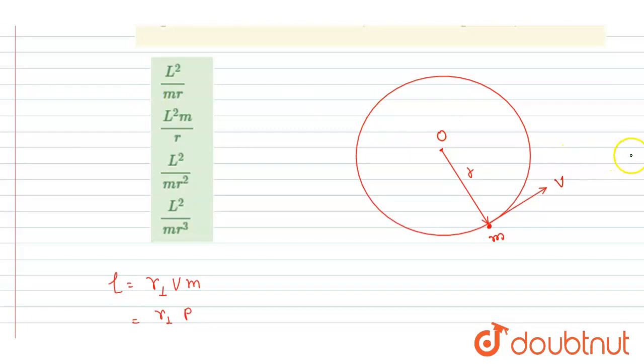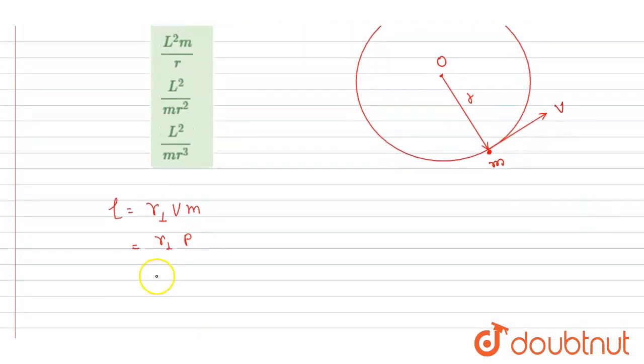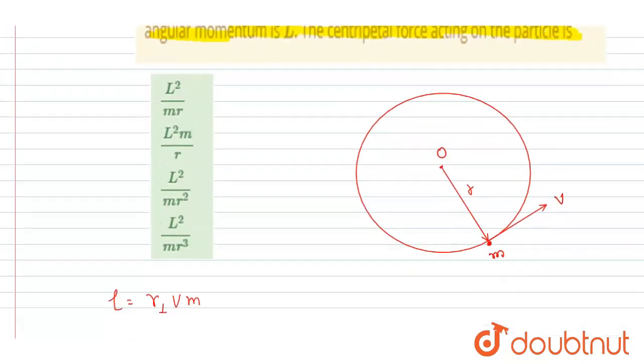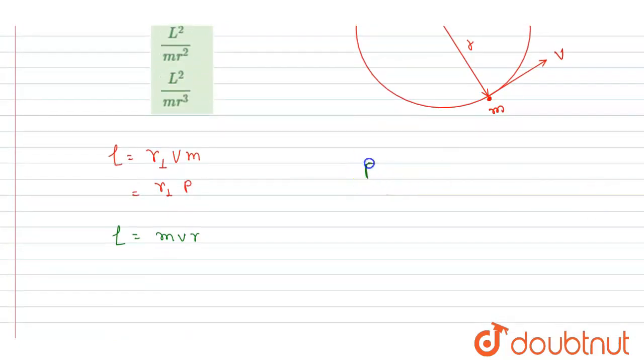I will write the angular momentum magnitude as L = MvR. And we want the centripetal force here, which is Fc = Mv²/R.